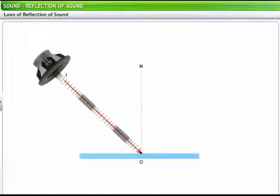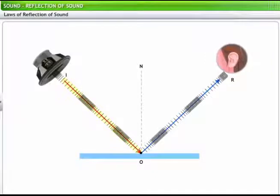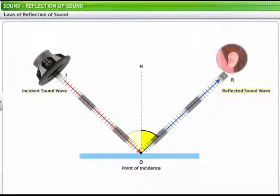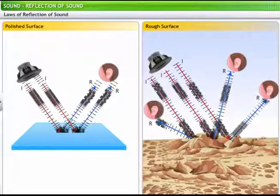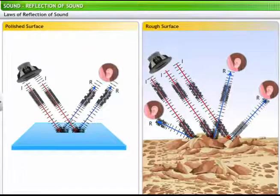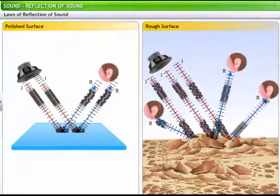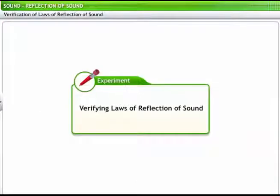According to the laws of reflection of sound, the direction in which the sound wave is incident and the direction in which it is reflected make equal angles with the normal to the reflecting surface at the point of incidence. The incident sound wave, the reflected wave, and the normal at the point of incidence are in the same plane. Sound waves need polished or rough surface obstacles to get reflected. Let's verify these laws through an experiment.